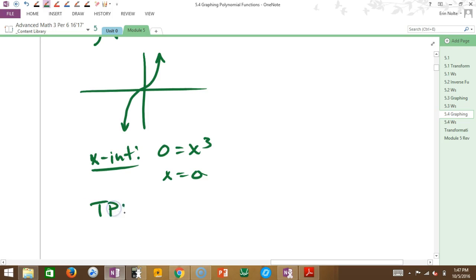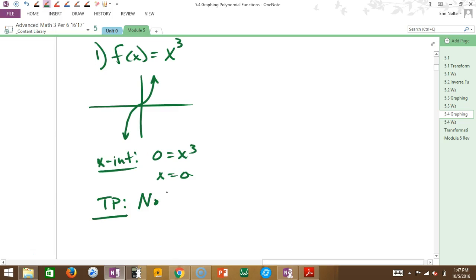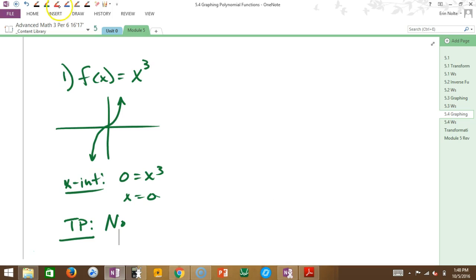Okay, we're also going to talk about turning points. So the definition of a turning point, I don't know if you want to write this down or not. A turning point is when a function changes from increasing to decreasing or vice versa. So what does it kind of look like my hand is doing? Maximums and minimums. Okay, so turning points are like maximums and minimums. Do I have a turning point on this particular function? No.